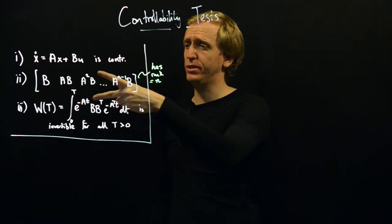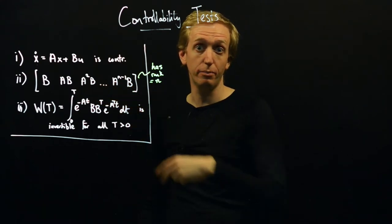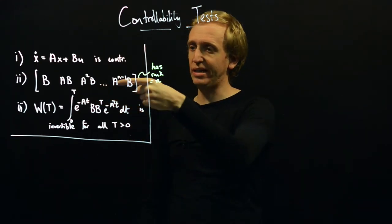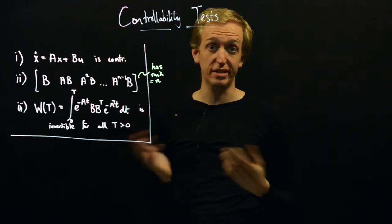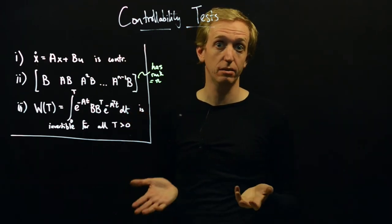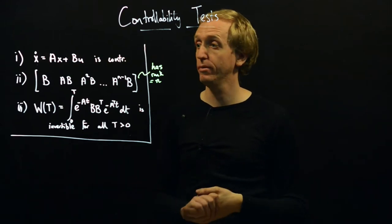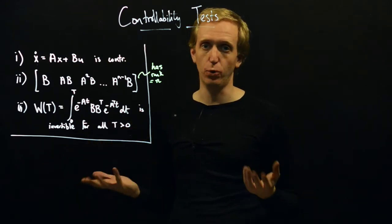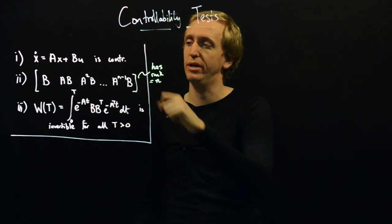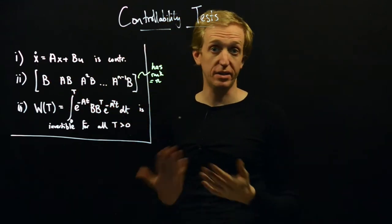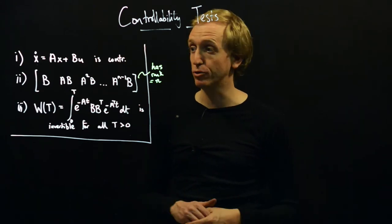We're going to be focusing on these two ways to test for controllability. This first one is the main test for controllability — this is the test you've seen before in previous courses. The test involves the controllability matrix, which is built out of the A and B matrices.